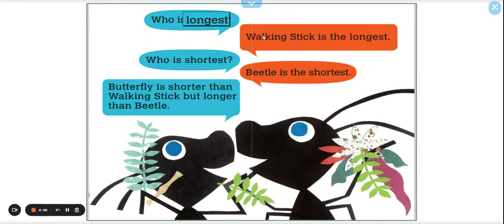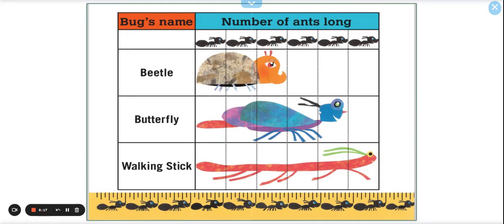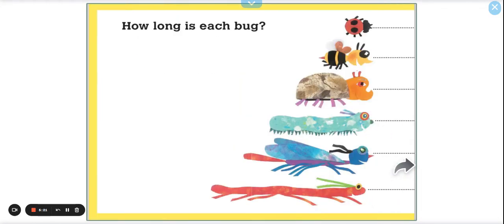So who is the longest? The walking stick is the longest. Who is the shortest? Beetle is the shortest. Butterfly is shorter than walking stick, but longer than beetle. So that's important to know. If I asked butterfly if they're shorter or longer than the walking stick, that answer would be butterfly is shorter, but butterfly is longer than the beetle. Let's go back just to make sure. The butterfly is longer than the beetle. We can see that.